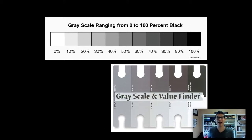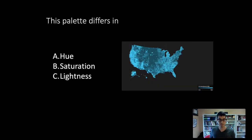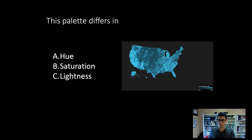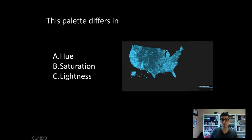Let's look at a couple of examples to identify how color is being used to signal different kinds of comparisons. Here we have a visualization of the unemployment rate in the United States. Looking at the legend in the corner, lower unemployment rates are darker colors and higher unemployment rates are lighter shades. It looks like there's pretty low unemployment in the middle of the country, getting higher on the west coast and particularly in the south. Is this a difference in hue, saturation, or lightness?